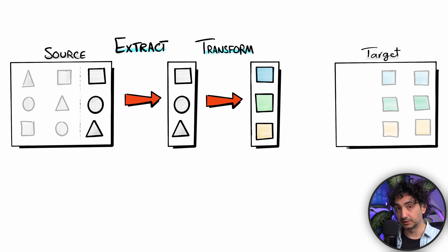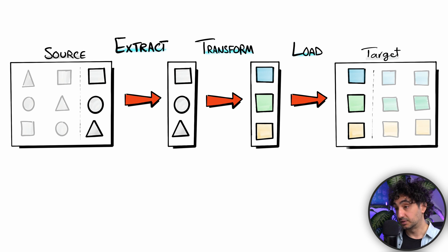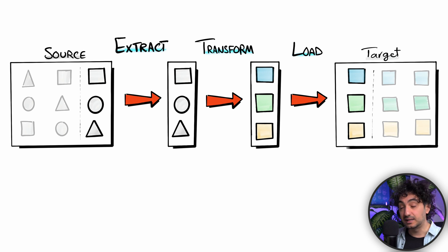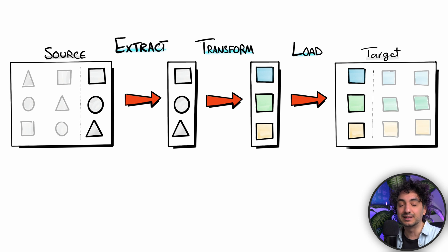Finally, the last step in the ETL process is the Load. We take the new transformed data and insert it into the target — for example, a data warehouse. So that's ETL in a nutshell: first Extract the raw data, then Transform it into something meaningful, and finally Load it to a target where it's going to make a difference.